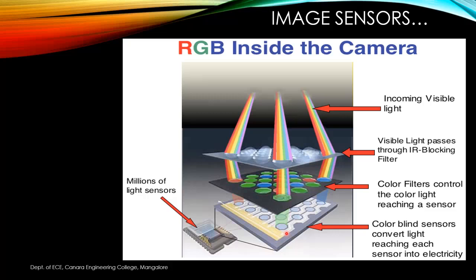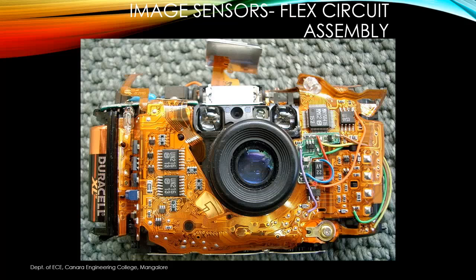We also need to filter out IR rays because infrared will affect the outcome. So we use an IR blocking filter. The incoming light falls on the IR filter first, then on the color filters to control which color passes through, and finally on the color-blind sensing elements. This is how a typical RGB camera works.